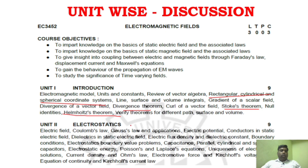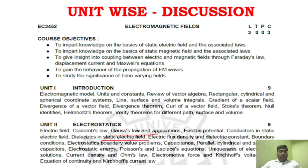Unit 2 has a very vast syllabus. But from 4 to 5 areas, we will ask questions — that is more than enough. The key areas are: Gauss's law, electric field derivation, electric field intensity in the coordinate system, Poisson's and Laplace equations. All those are very important key areas.